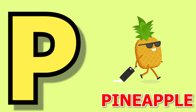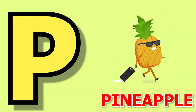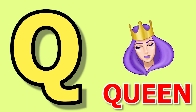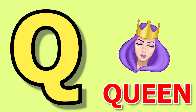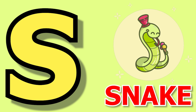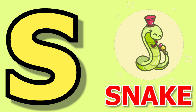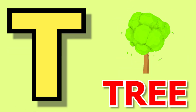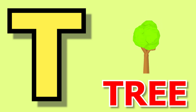P for pineapple, pineapple means ananas. Q for queen, queen means rani. R for robot, robot means robot. S for snake, snake means sap. T for tree, tree means pig.